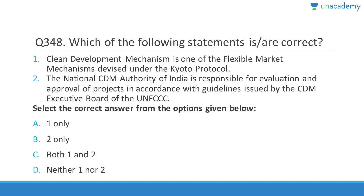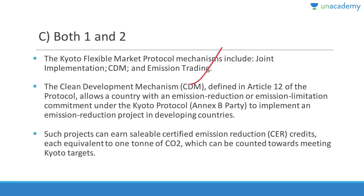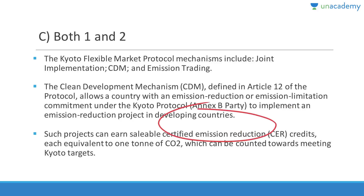Question 348: Clean Development Mechanism (CDM) is one of the flexible market mechanisms under the Kyoto Protocol — correct. The National CDM Authority of India evaluates and approves projects per guidelines issued by the CDM Executive Board of UNFCCC — also correct. Answer is C (both 1 and 2). Kyoto's flexible mechanisms include joint implementation, CDM, and emission trading. CDM allows Annex B countries like Germany to implement emission reduction projects in developing countries like India, earning certified emission reductions (CERs).